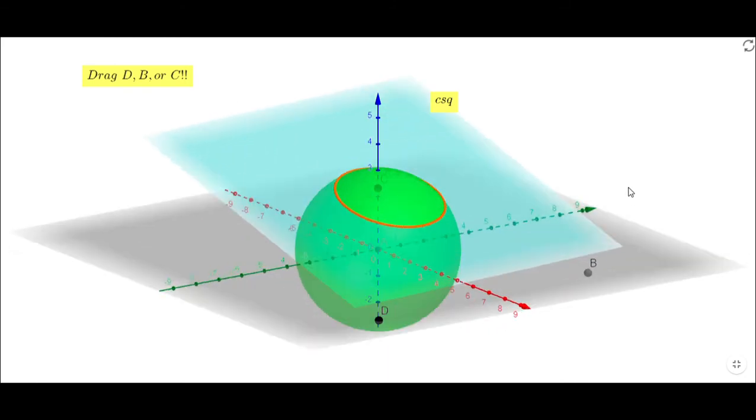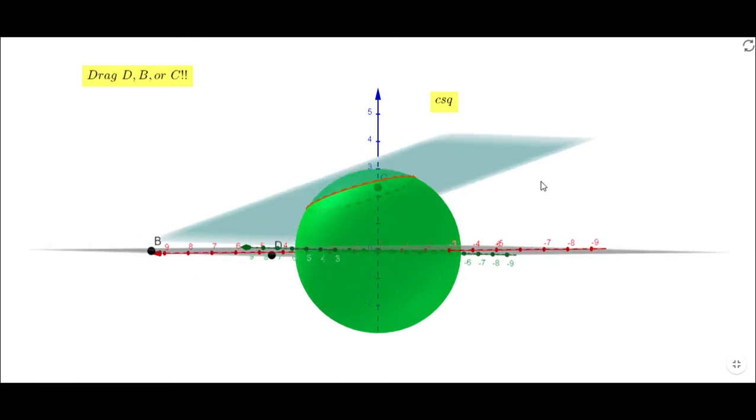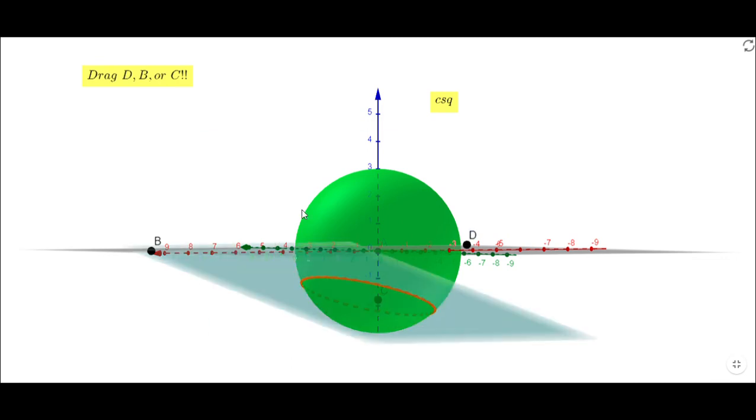And let's see how I can drag C, the last one. You notice you also get some other cross sections, and of course you can drag C and D and see what's going on, things like this.